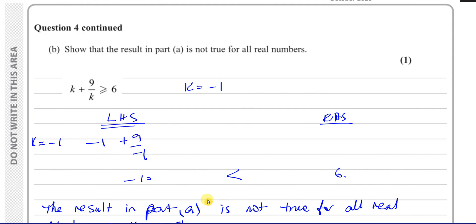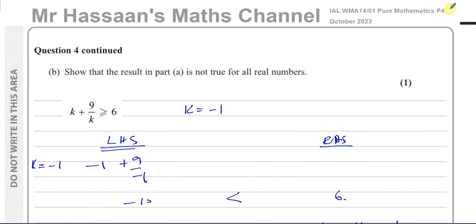Other questions from this paper can be found in the playlist appearing in the top right corner at the end of the video. You'll also find a playlist on proof by contradiction from P4, a subscribe link at the bottom left, and in the top left a link to a video showing how to navigate my channel and find the index PDF, which you can use to find topics you're looking for. Thanks for watching and see you soon.